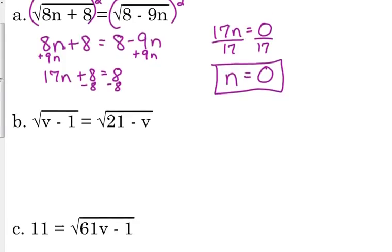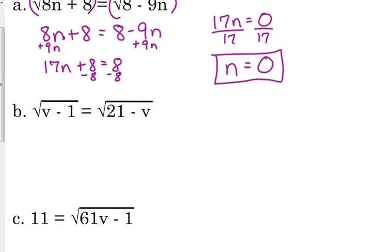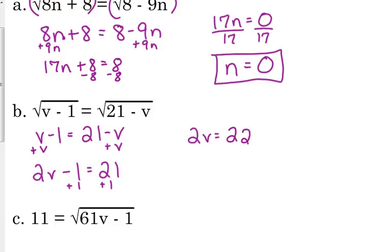Okay, so similar problem here. Set v minus 1 equal to 21 minus v. Be careful with this. These can be a little tricky. They look really simple, but a lot of people mess up the signs. Add v to both sides, so we get 2v minus 1 equals 21. Add 1 to both sides, so 2v equals 22. Divide by 2, v equals 11.